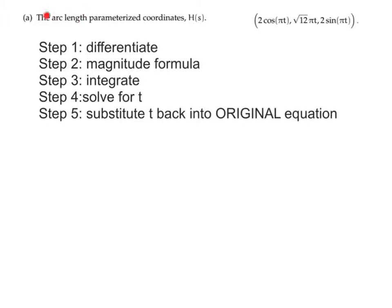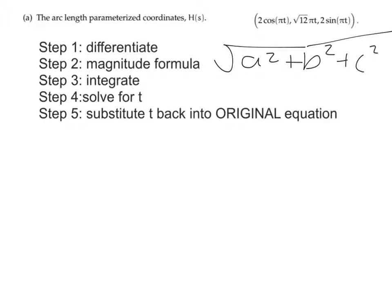So if we want to find the arc length, there are five steps involved. Step one: differentiate H of t. Step two: apply the magnitude formula, which is the square root of a² + b² + c², since we'll have three terms — that's basically the distance formula. Step three: integrate. Step four: solve for t. Step five: substitute t back into the original equation.